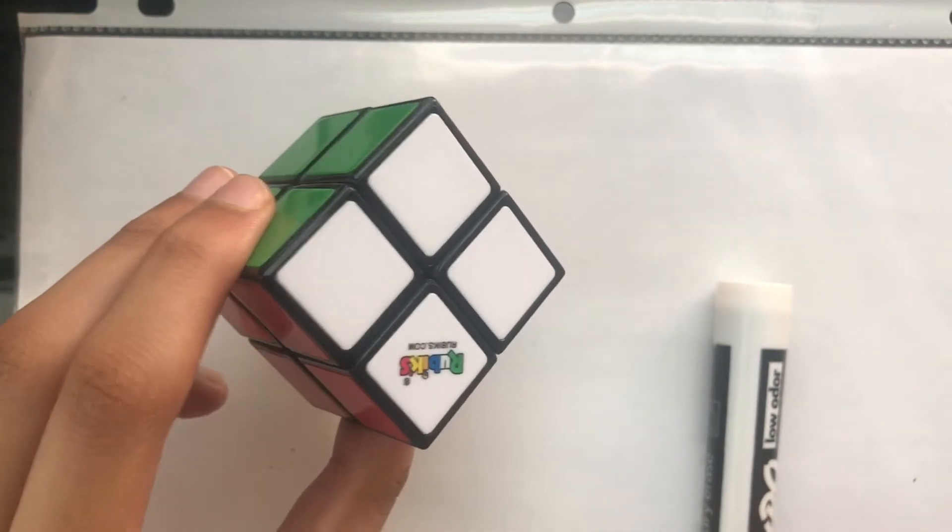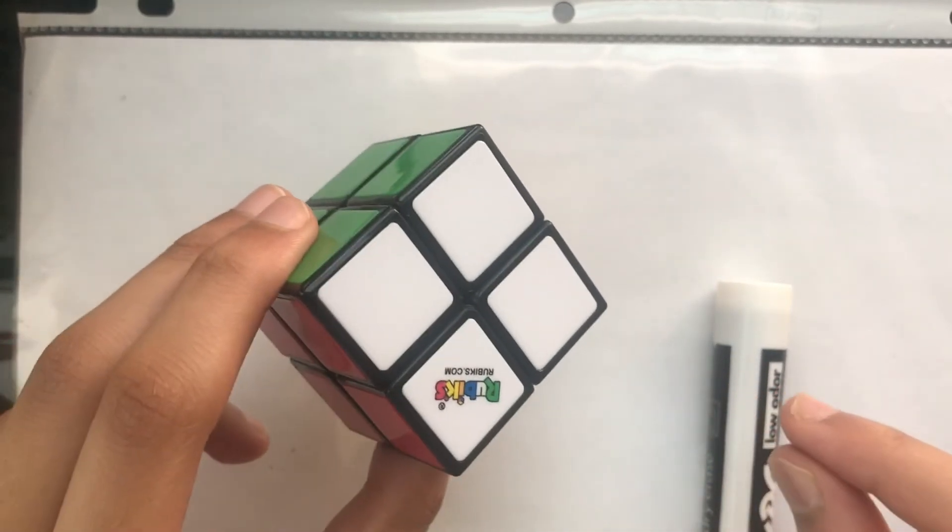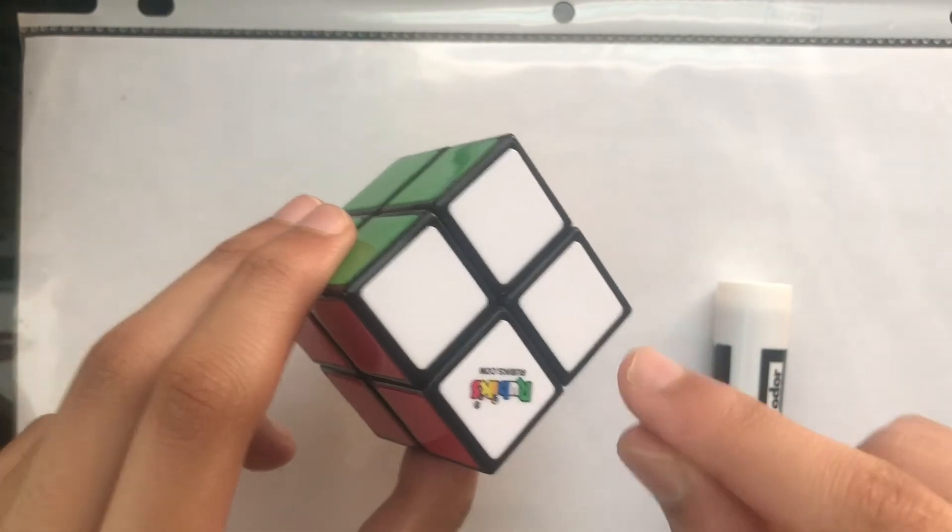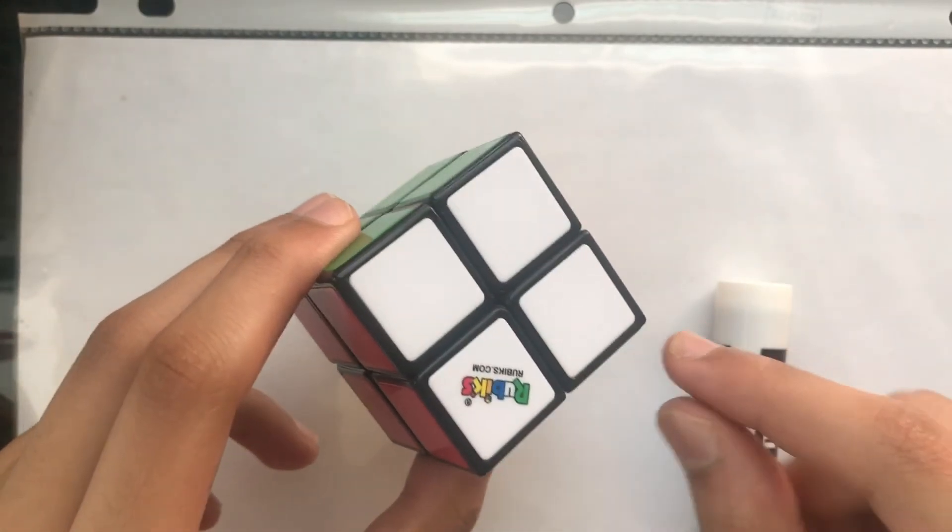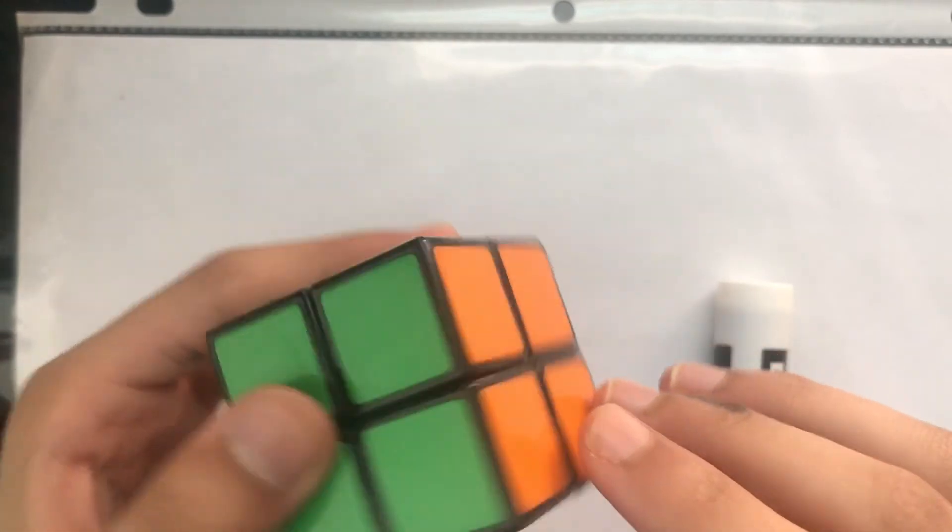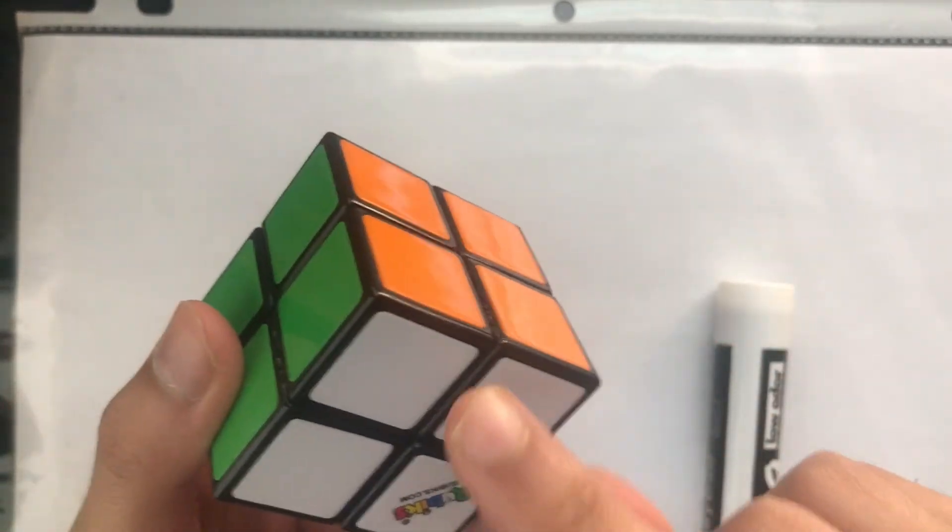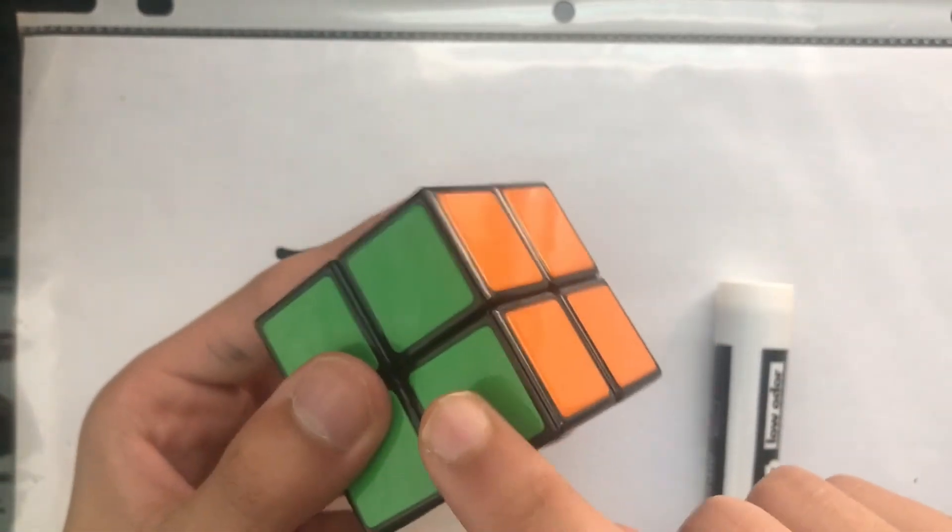And next we have to consider the orientation of the 7 corners in the question. First we consider the permutation, now we have to consider the orientation. So 6 of them we can orient in 3 ways since they have 3 colors. So let's take this corner for example, white, green, orange.